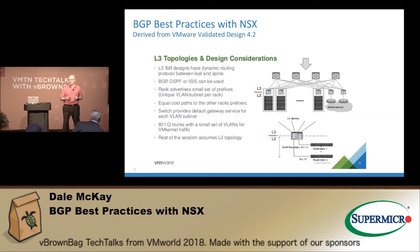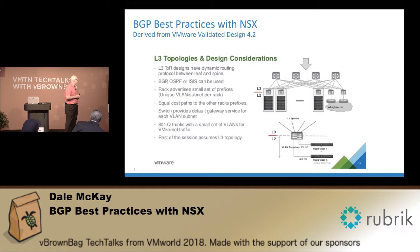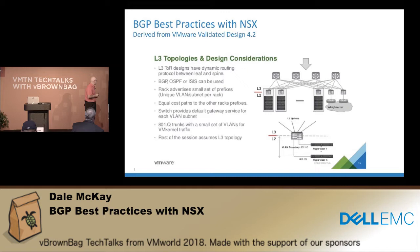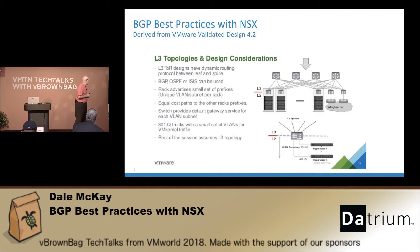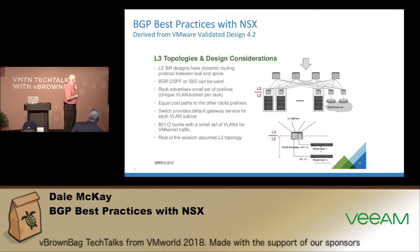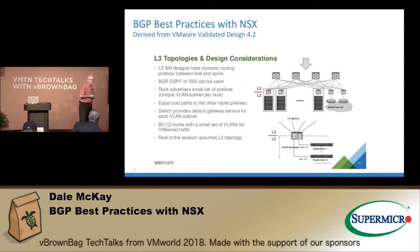We're also going to make sure that we talk about dynamic routing protocols. Obviously we're here to talk about BGP, but OSPF could also be used. Some of the guiding principles in this layer three leaf and spine architecture: we're going to advertise a small set of prefixes, we're going to have equal cost paths to the other racks, the switch is going to provide the default gateway at the top of the rack, we'll probably have some 802.1Q trunks, and we're going to assume a layer three topology.